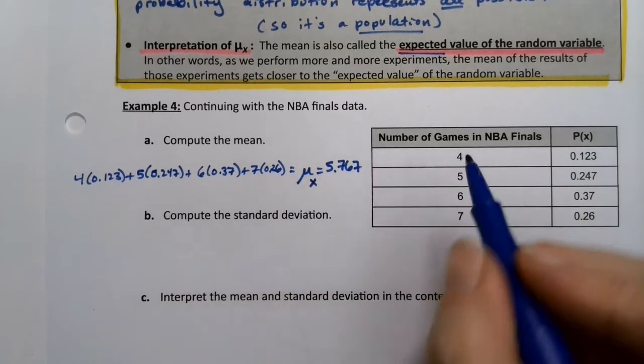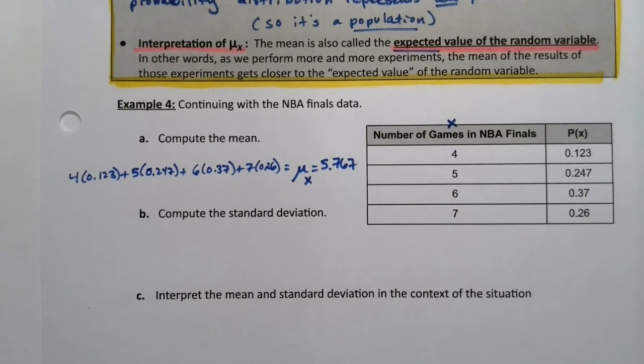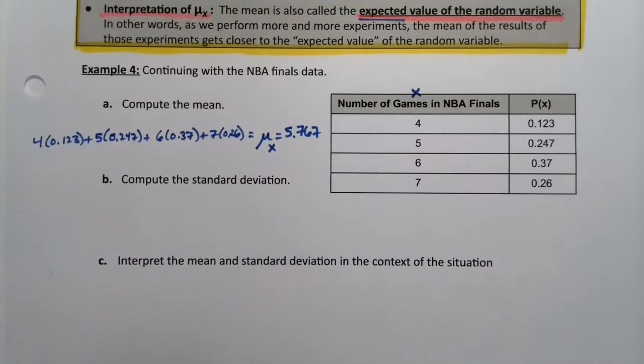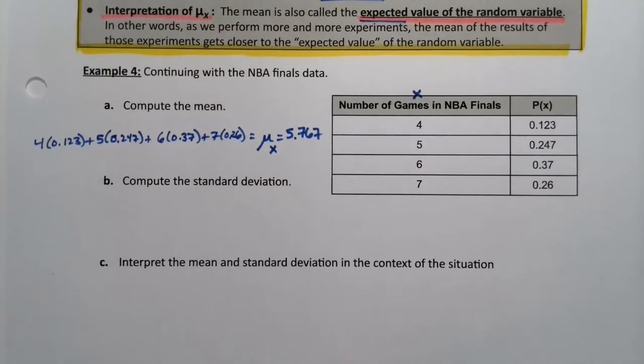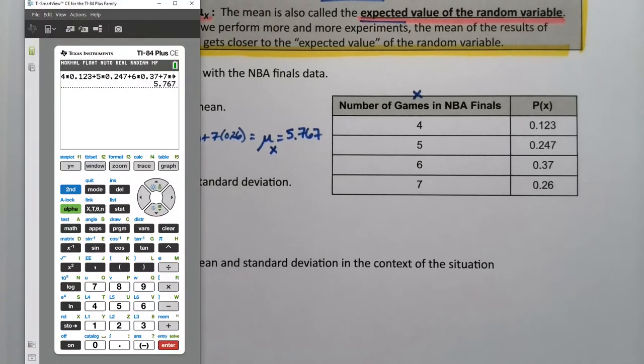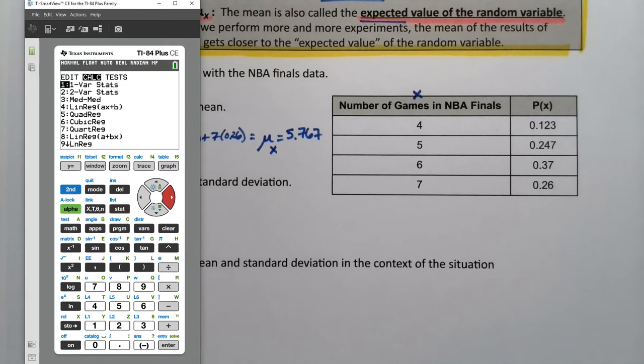X being the number of games, right, so this is X right here. Now that said, when I said technology up here for using technology to find the mean and the standard deviation, I wasn't really intending us to use the calculator in that way. So there's another way we can use the calculator, and then we'll also use StatCrunch as well. So if I go to STAT, EDIT, and I have the columns of data right there, then I go to STAT and CALC, 1-Var Stats.